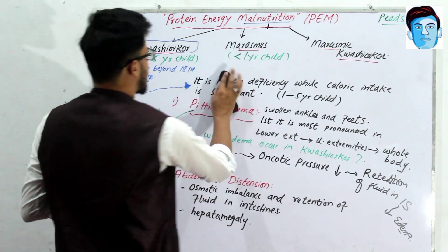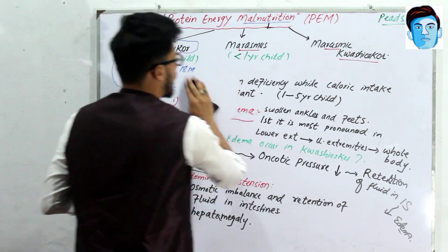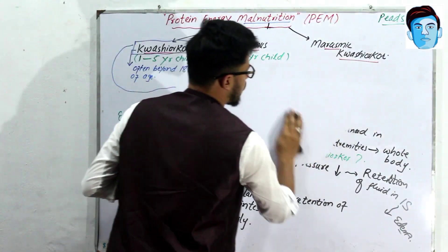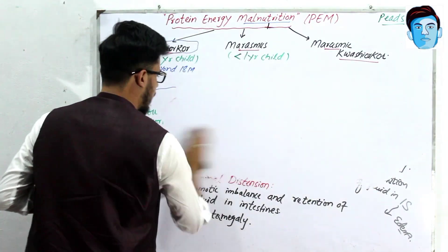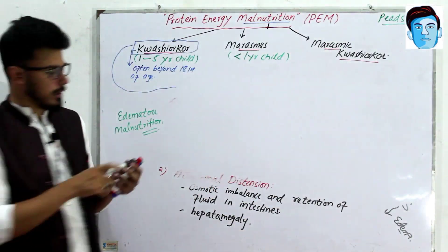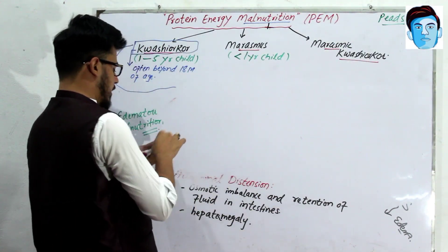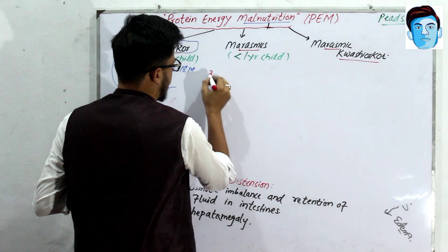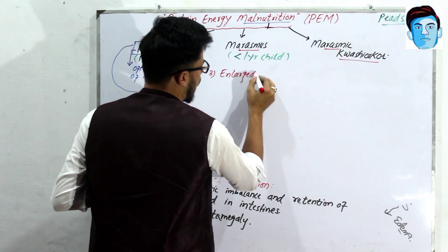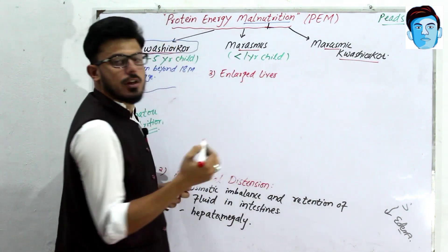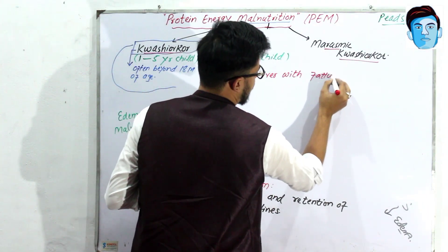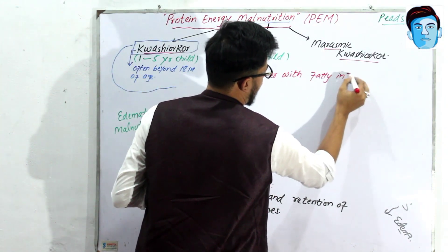The third feature of kwashiorkor is enlarged liver with fatty infiltrate.